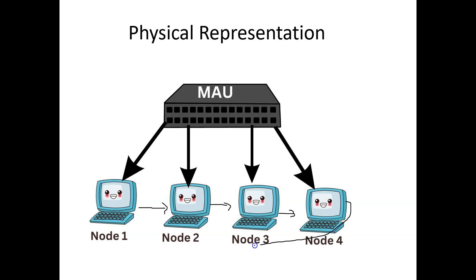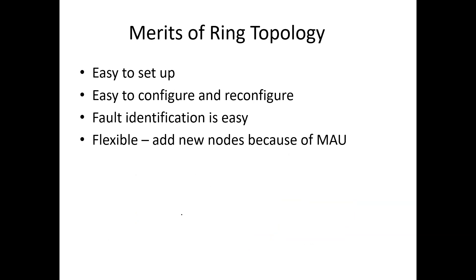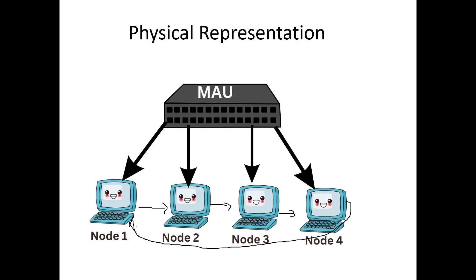As far as the merits of ring topology are concerned: first, ring topology is easy to set up and install because a minimum number of components are used, like a multi-station access unit and some nodes. We prefer ring topology for a comparatively smaller area, and because of that smaller area and fewer components, it is easy to configure and reconfigure. Also, we can easily identify faults — for example, if node 3 is not working, there is no flow of token from or towards node 3, so we can easily detect the fault and troubleshoot it.